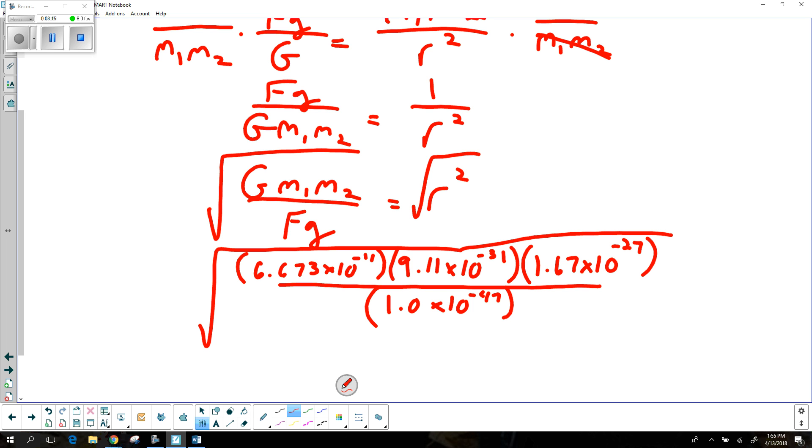To type this into my calculator, I'm going to type in the numerator exactly how it's written. Parenthesis 6.673 times 10 to the negative 11th, parenthesis 9.11 times 10 to the negative 31st, parenthesis 1.67 times 10 to the negative 27th. Get that answer. Divide that by parenthesis 1.0 times 10 to the negative 47th. Get that answer. Square root.